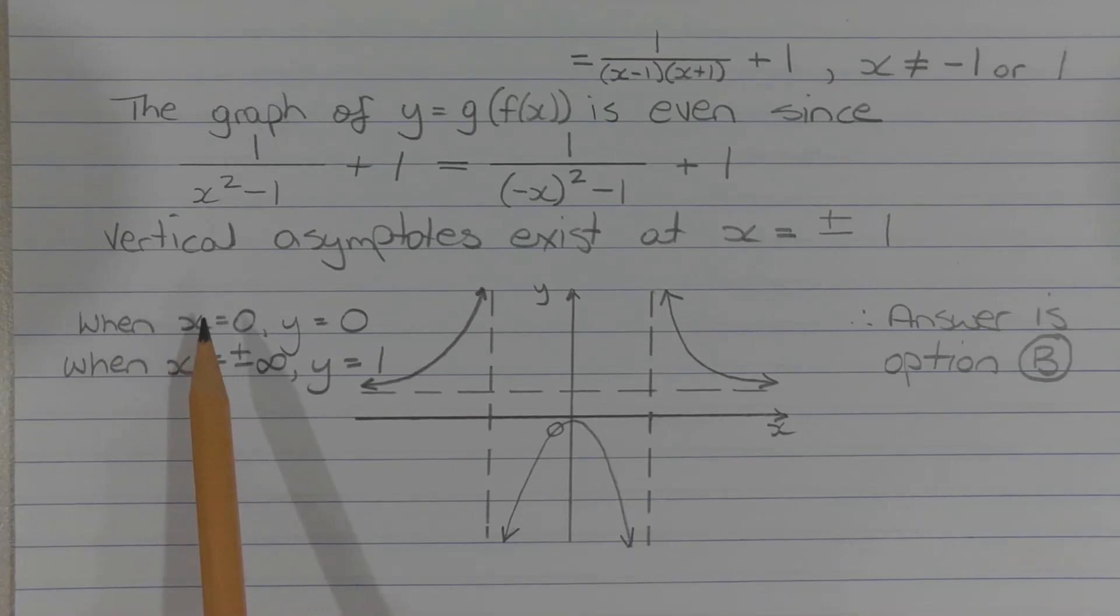When x equals 0, y equals 0, so the graph passes through the origin. When x equals plus or minus infinity, y tends to 1, so we have a horizontal asymptote at y equals 1. Therefore the answer is option B.